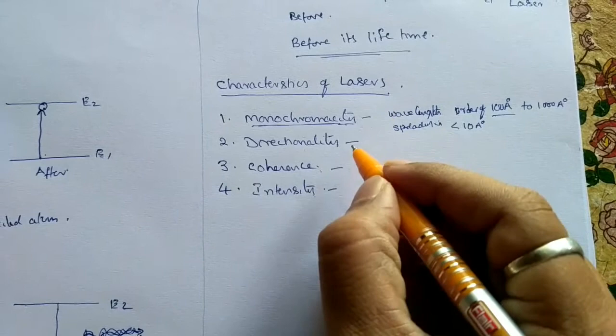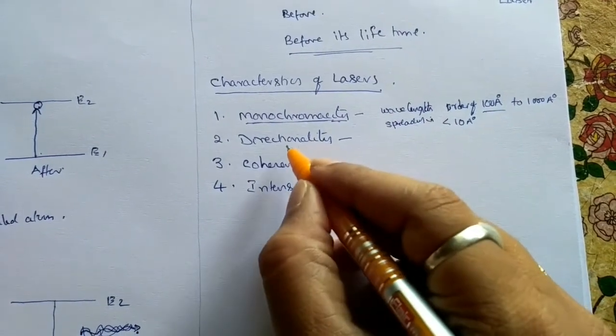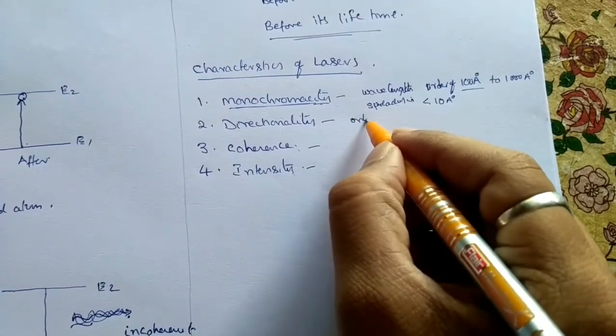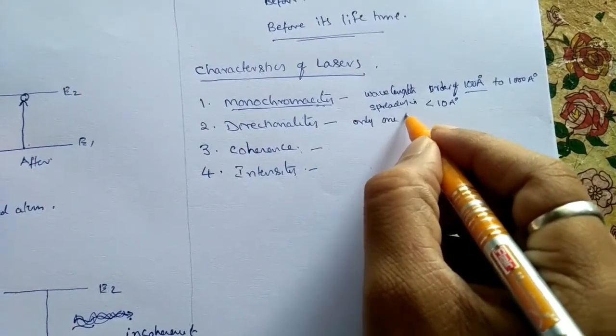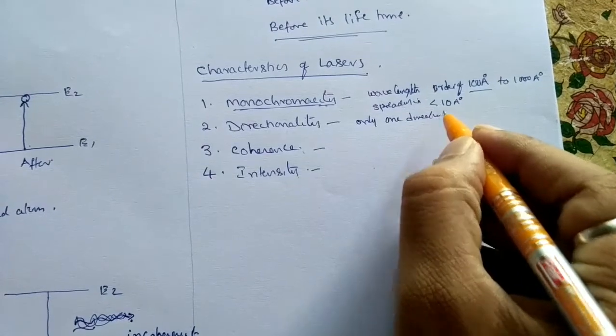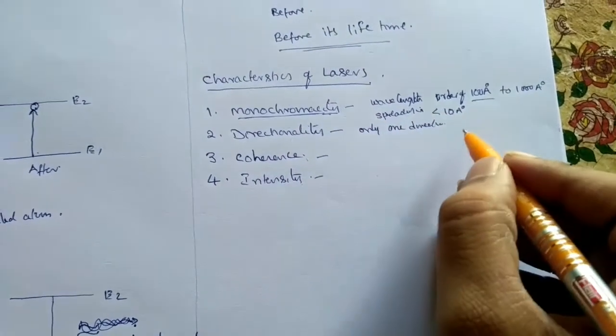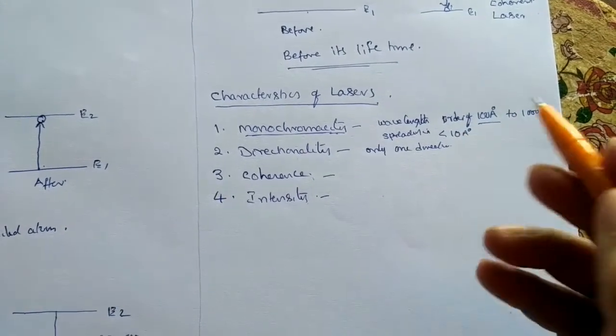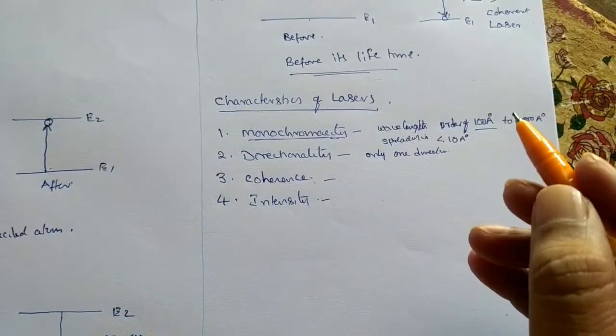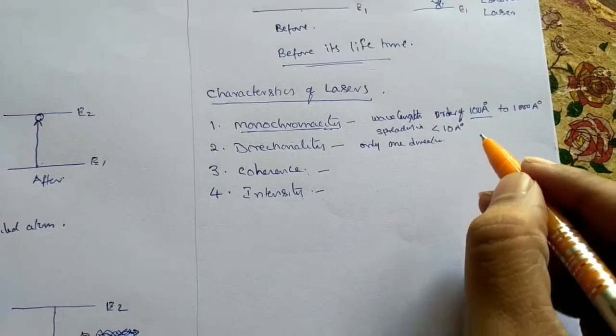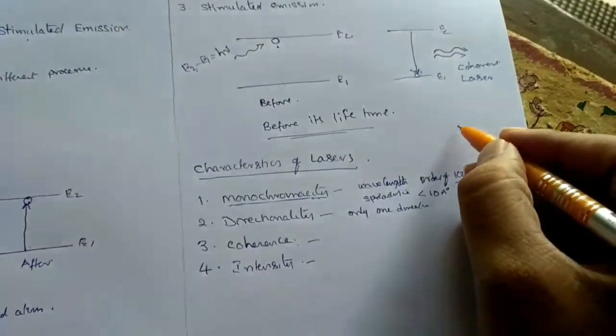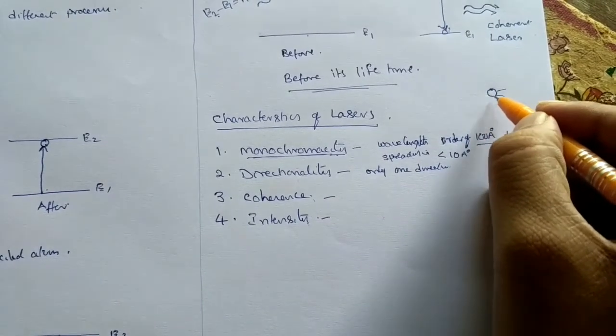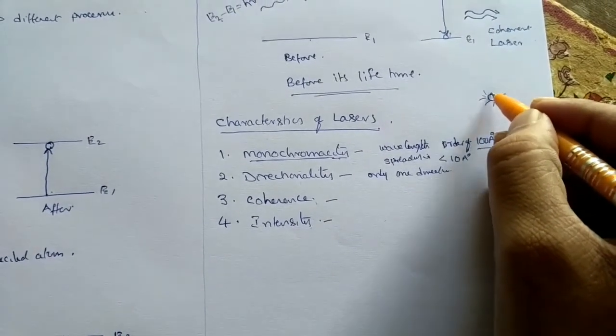Next is directionality. Directionality means only one direction. The laser beam propagates only in one direction. According to our conventional lights, conventional lights like an ordinary bulb spread light in all directions.